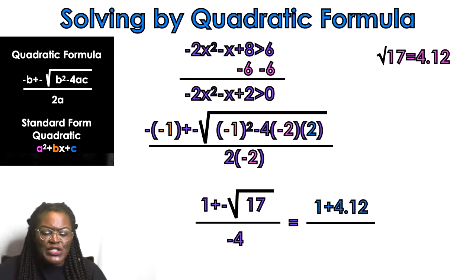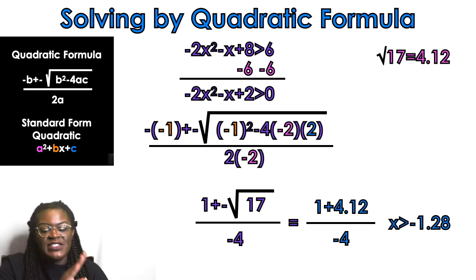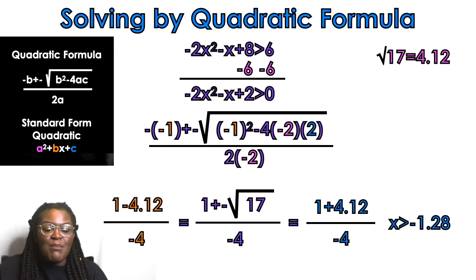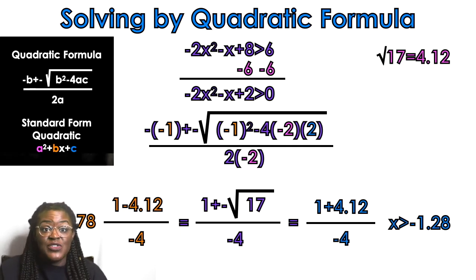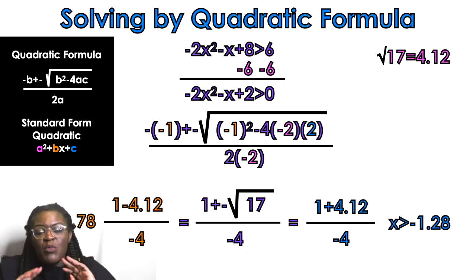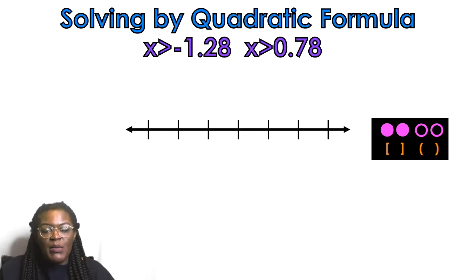So we do 1 plus 4.12 over negative 4, which gives us approximately negative 1.28. Then on the other side — because the quadratic formula requires a plus and a minus — we do 1 minus 4.12 over negative 4, which gives us approximately 0.78. Those are the two values we take to the number line.